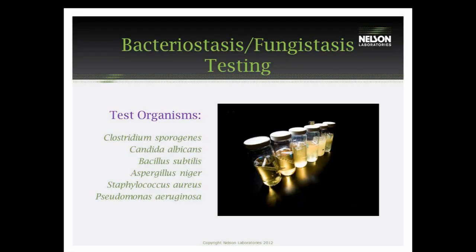After we get these results, the same samples will be transferred for bacteriostasis/fungistasis testing. We will inoculate each test vial with the specific test organism listed. These need to demonstrate growth. What this test proves is that there is nothing in the device that will inhibit the growth of organisms and give us a false negative result in our product sterility testing. This series of BF testing is only required one time on the device unless there are any manufacturing or product changes. That data can support product sterility testing from then on out.